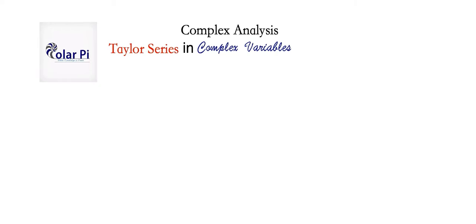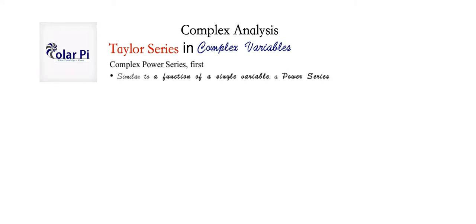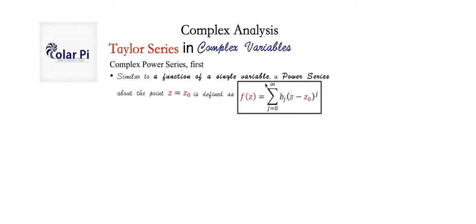To start talking about Taylor series for functions of a complex variable, let's first talk about what we mean by power series for functions of a complex variable. Similar to a function of a single variable, a power series about the point z equals z sub zero is defined as this here. If you look at what I have in box, this looks very much like how we define power series for a function of a real variable, if only we change the z's to x's and the b sub j to a sub j. It's obvious why we want to use j instead of i when talking about functions of a complex variable, as far as our index of sigma.